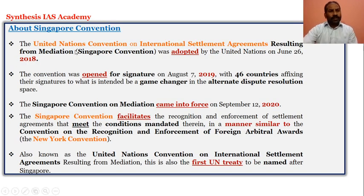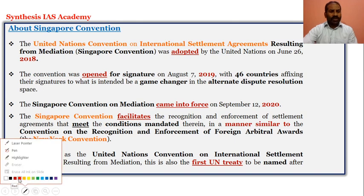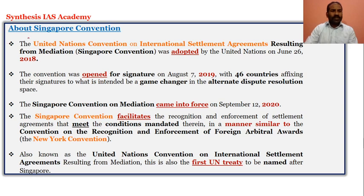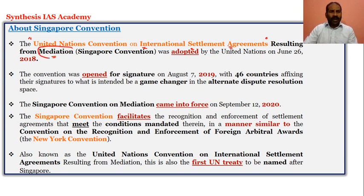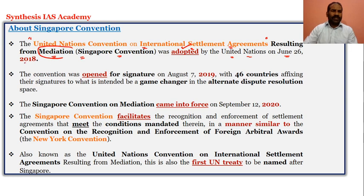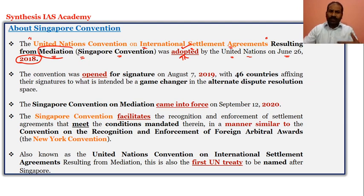The Singapore Convention is actually the United Nations Convention on International Settlement Agreements which results from mediation. This agreement through mediation is also referred to as the Singapore Convention. It was adopted by the United Nations on June 26, 2018. Throughout this topic we will refer to it as the Singapore Convention.